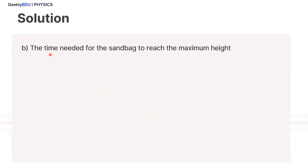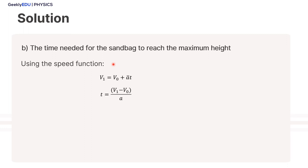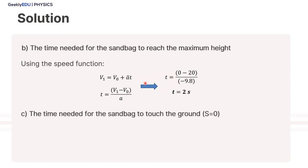For letter B, the time needed for the sandbag to reach the maximum height, we use the speed function. Setting V1 as 0, V0 as 20 meters per second, and inserting the gravity acceleration, we can solve for the time needed.